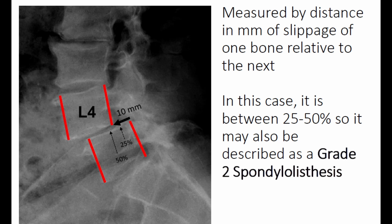The second way of describing degenerative spondylolisthesis is by simply measuring the number of millimeters that one bone is slipped in front of another. Here you'll see we've marked the back of the L4 bone and the back of the L5 bone and simply measure the displacement, which is 10 millimeters here. That displacement of 10 millimeters falls between the 25% and 50% line, which would be described as a grade two spondylolisthesis. In our world — the surgeon's world — grade one is mild, grade two is a little bit more, and three and four are severe.